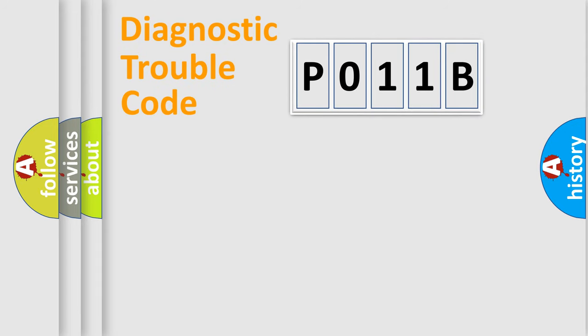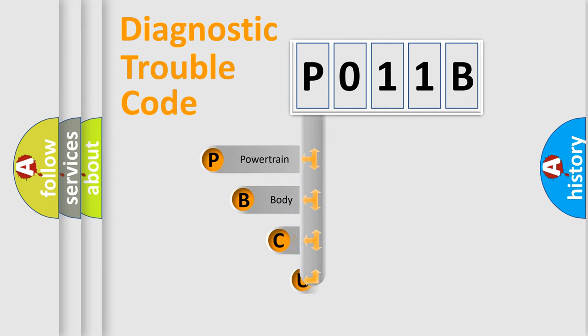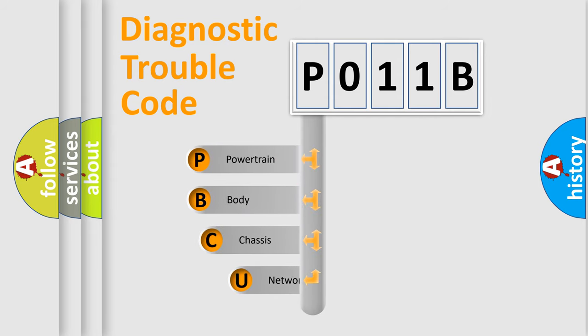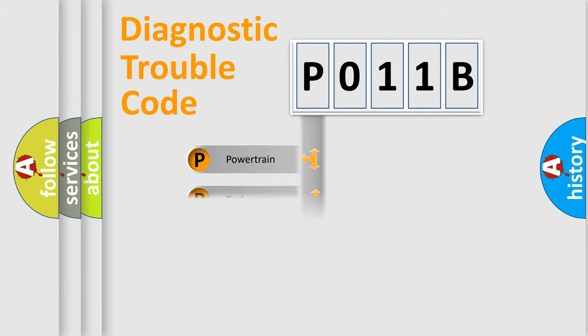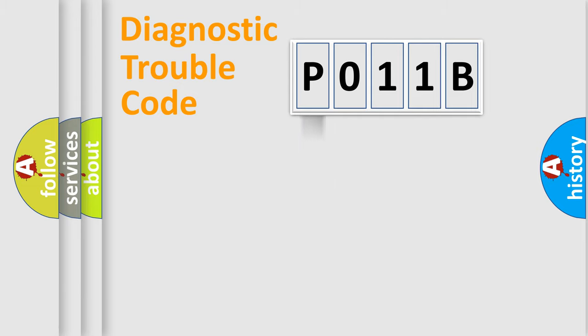Let's do this. First, let's look at the history of diagnostic fault code composition according to the OBD2 protocol, which is unified for all automakers since 2000. We divide the electric system of the automobile into four basic units: Powertrain, body, chassis, and network.